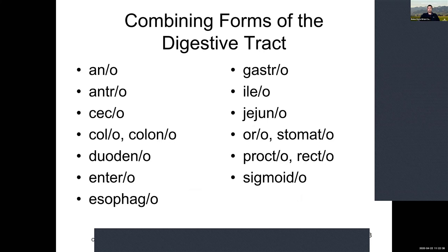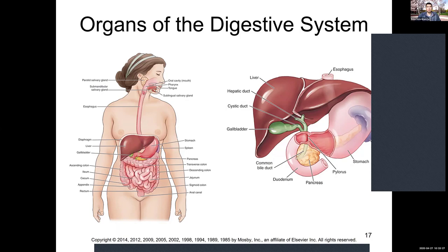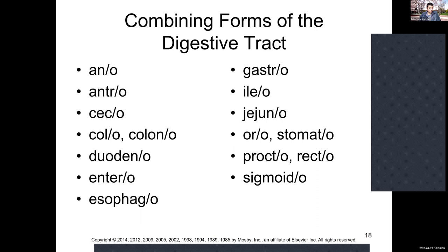Now we'll start talking about terminology for chapter 11 — combining forms of the digestive system. Looking through these, we see words like stomato and oro for mouth, jejun for jejunum, ileo for ileum, gastro for gastric, and cec for cecum. Most of these make sense once you know the gross anatomy of the digestive system. Pages 458 and 459 discuss these organs, leading into the chart of combining forms on page 461.